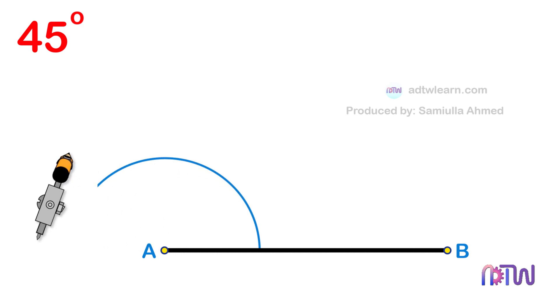After this, without changing the length of the compass and using these intersection points as center, cut arcs as shown.